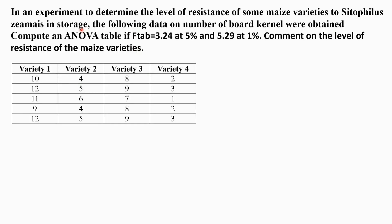In an experiment to determine the level of resistance of some mixed varieties to Cytophilus semis in storage, the following data on numbers of both kernels were obtained. Compute an ANOVA table if F tabulated is 3.25 at 5% and 5.29 at 1%.